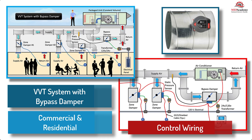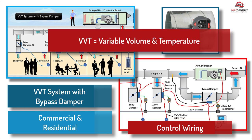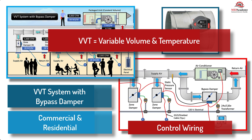You might be familiar with a variable air volume VAV system, but we'll explain the less energy efficient version that tries to mimic the VAV system. A variable volume variable temperature (VVT) system uses similar components to that of a VAV but is not as effective at saving energy. We'll show you the control strategy for a commercial and residential application using a bypass damper.